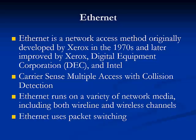Ethernet, as specified in IEEE's 802.3 standard, is a network access method that uses Carrier Sense Multiple Access with Collision Detection to determine how multiple nodes share a single channel. Depending on the type, Ethernet may run over fiber-optic cable or twisted-pair copper wiring. Ethernet offers between 10 Mbps and 10 Gbps throughput.